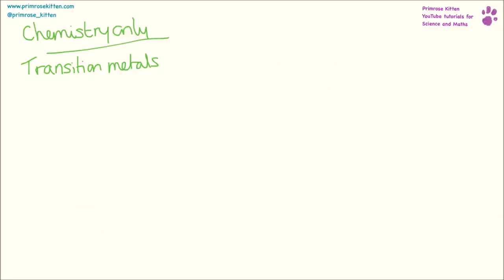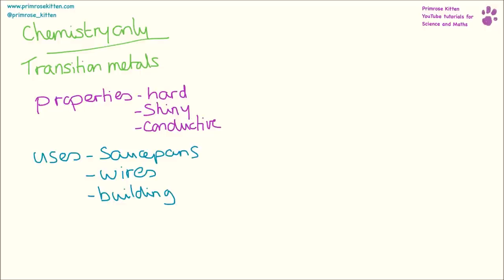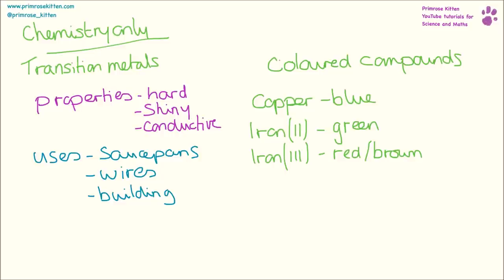This section is about transition metals and it's only for those people doing chemistry, not combined science. Transition metals are fairly typical metals. So if you think of a property or a use of a metal, then it can generally be applied to transition metals. For example, the transition metals are hard, they're shiny and they're good at conducting heat and electricity. Because of these properties, they can be used for things like building bridges, building large structures. They can be used for saucepans because they conduct heat or wires because they conduct electricity. Transition metals can also come in lots of different colors. For example, copper is going to be blue, iron two green, iron three red brown.